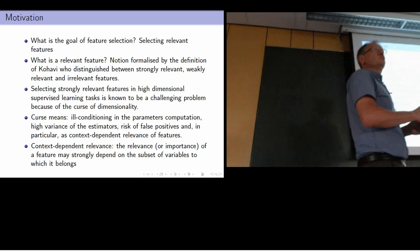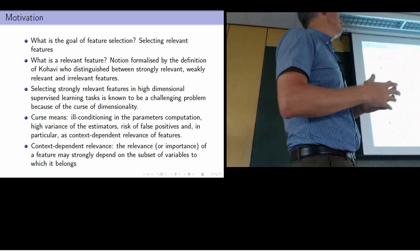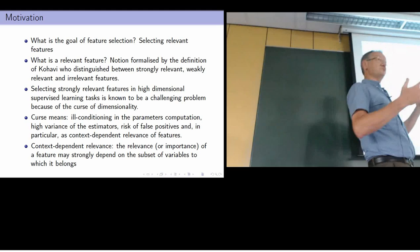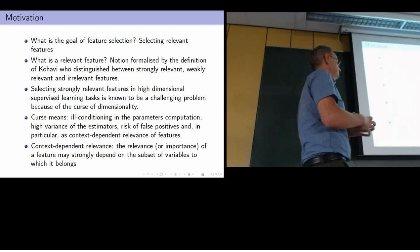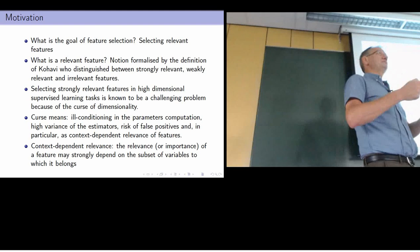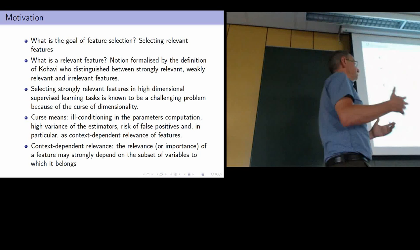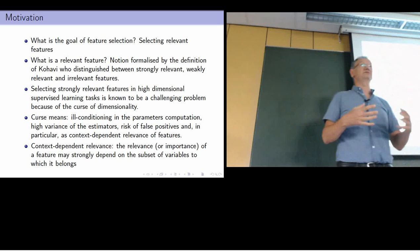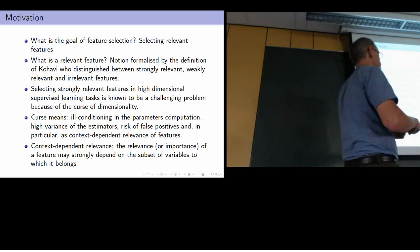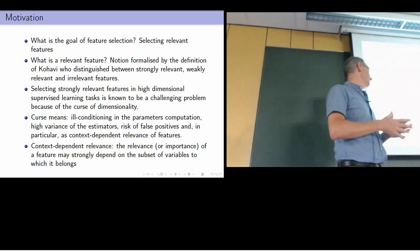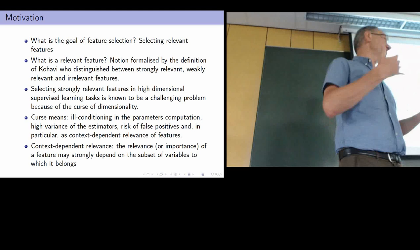This is especially problematic because the relevant settings, for instance in bioinformatics, are high-dimensional settings. The number of samples is comparable to — sometimes smaller than — the number of variables. This is the curse of dimensionality. If you want to estimate the relevance of a variable, you have a lot of conditioning, a lot of variance — removing one sample could change the value of your estimation a lot. You could have false positives: selecting features which are not relevant.